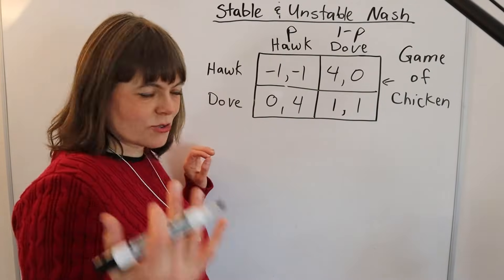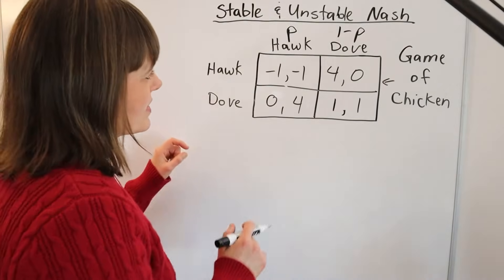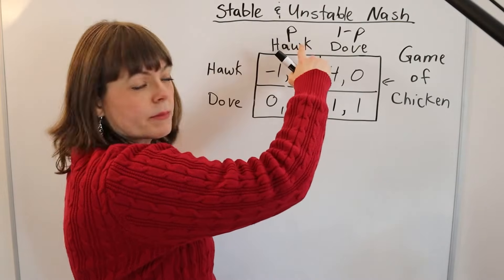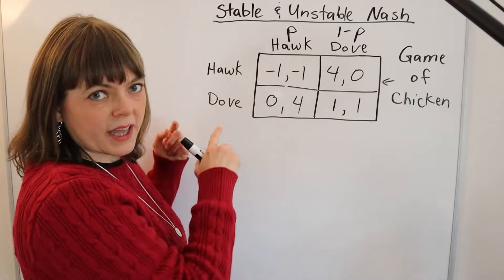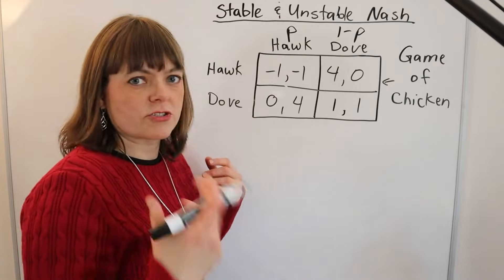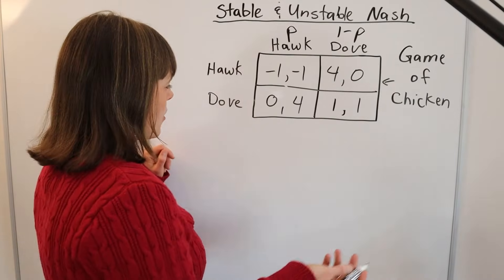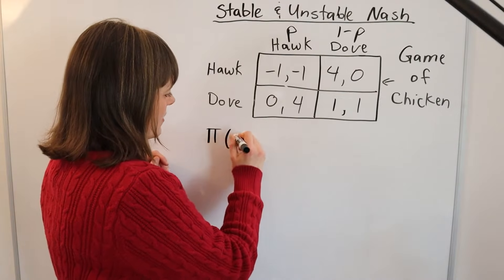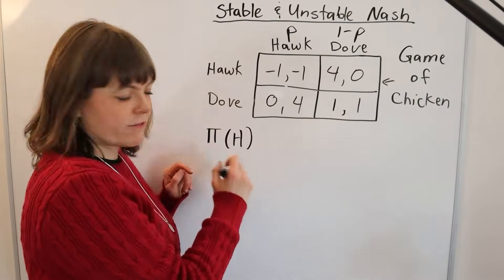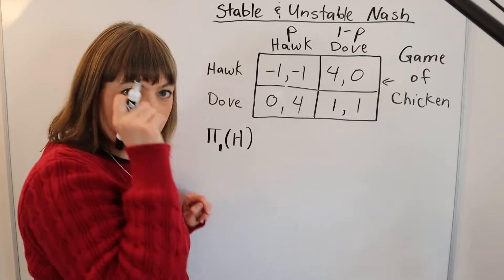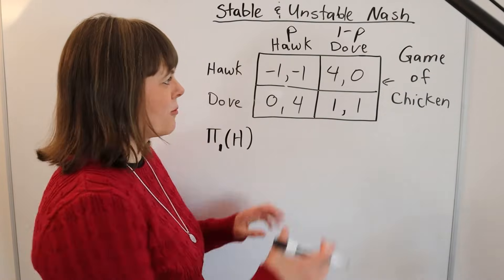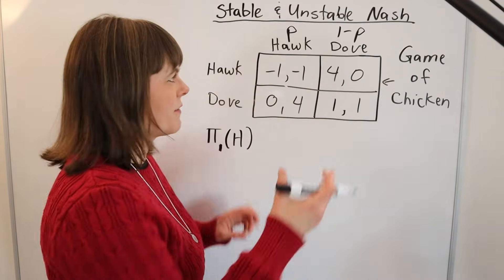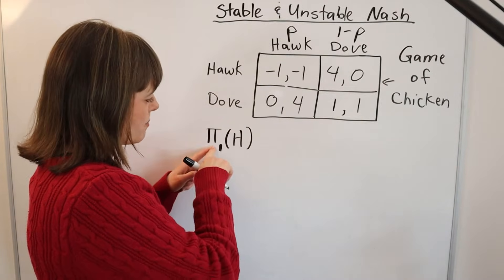There are two strategies for doing this. One is to choose a probability of going Hawk that makes the other player indifferent between their strategies. To do that, we need to figure out the payoff of choosing Hawk. I'm going to calculate the payoff to player one from choosing Hawk. It doesn't actually matter here because this is a symmetric game—the players have the same payoffs if you flip it. But we'll just go with player one.